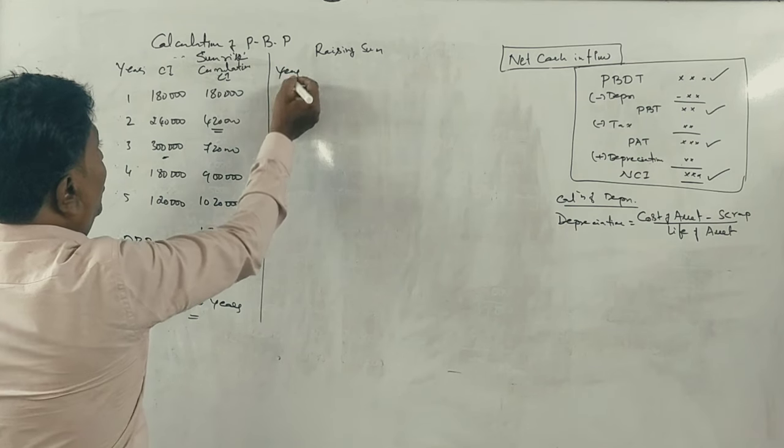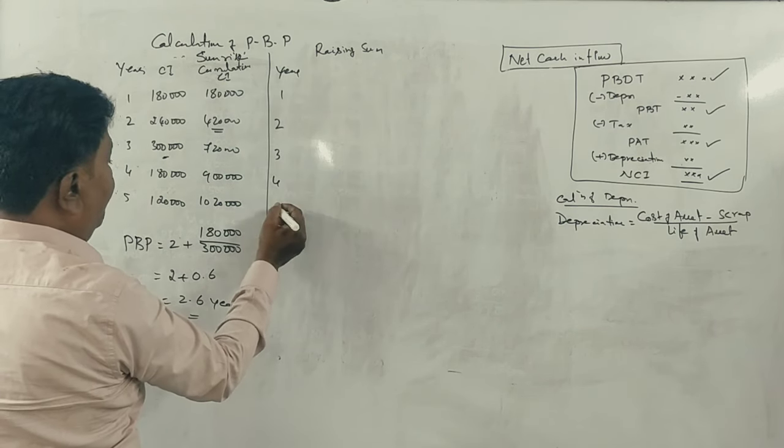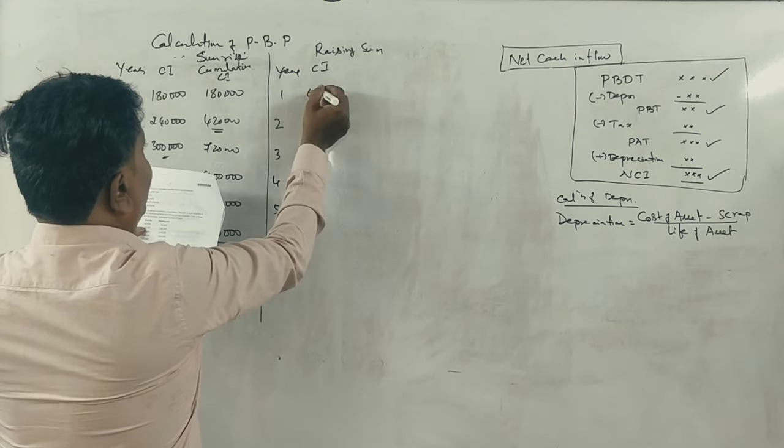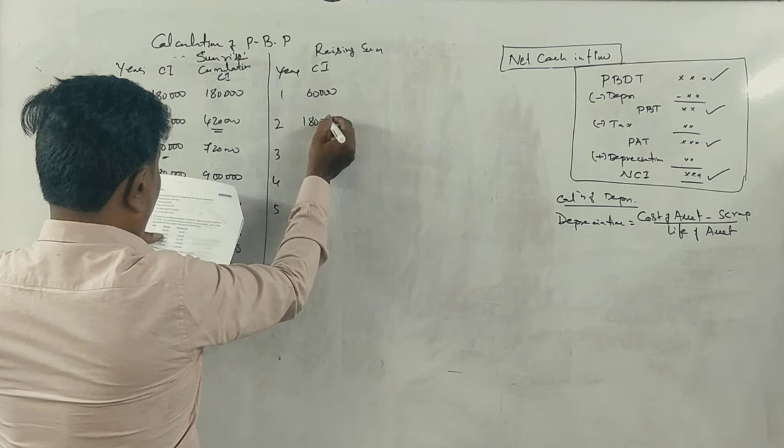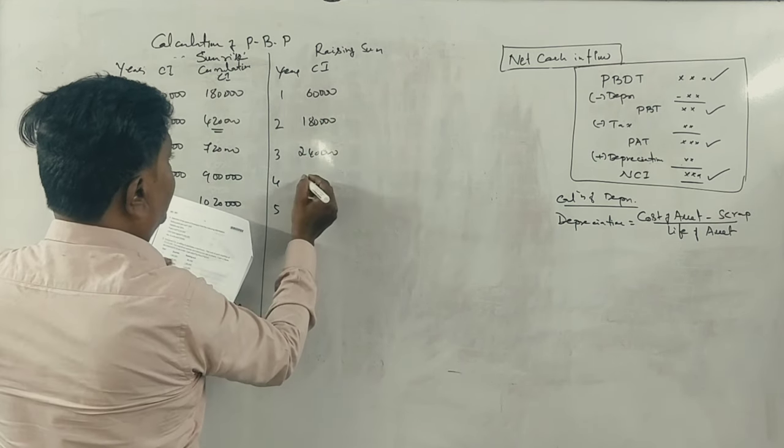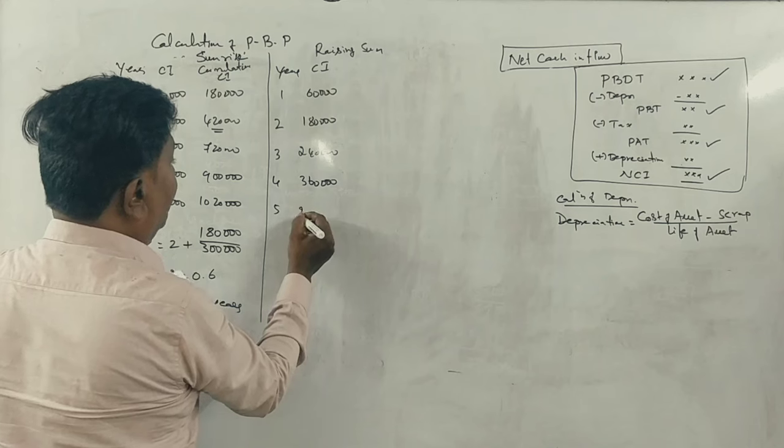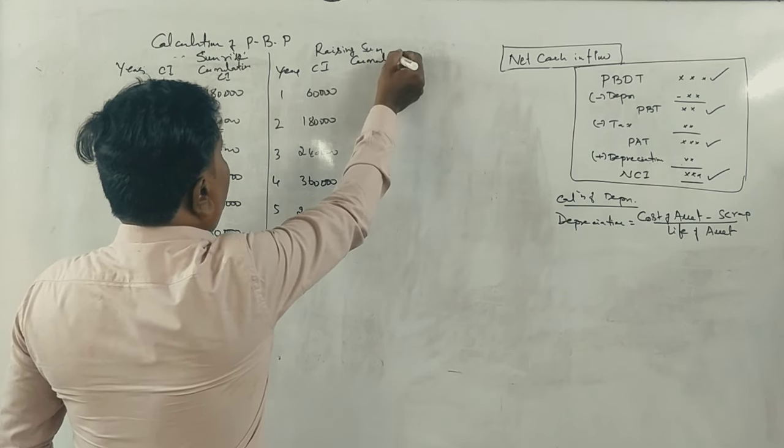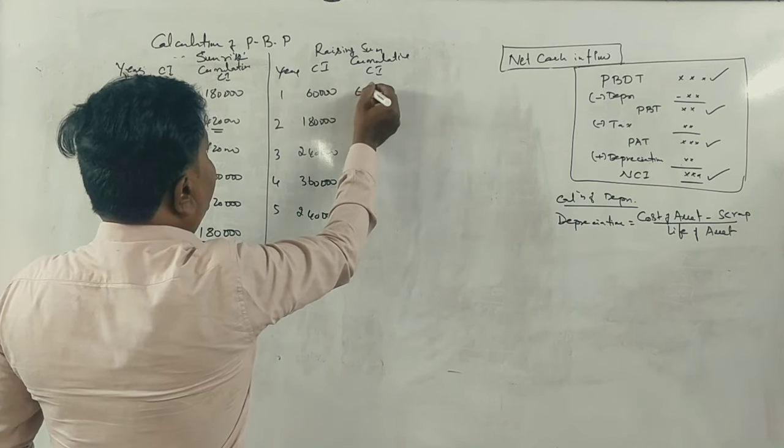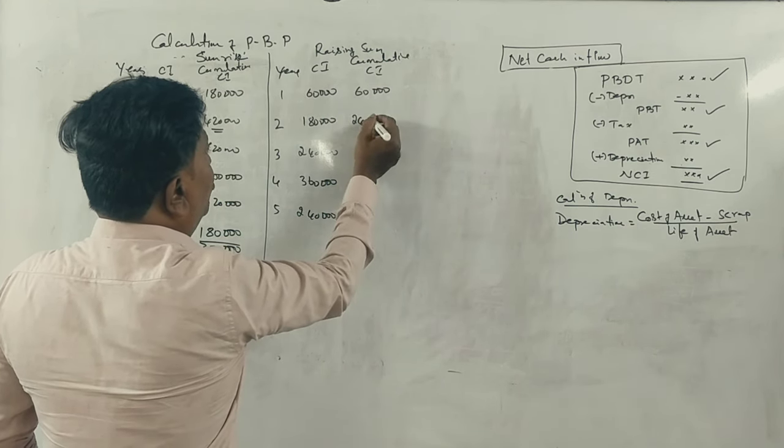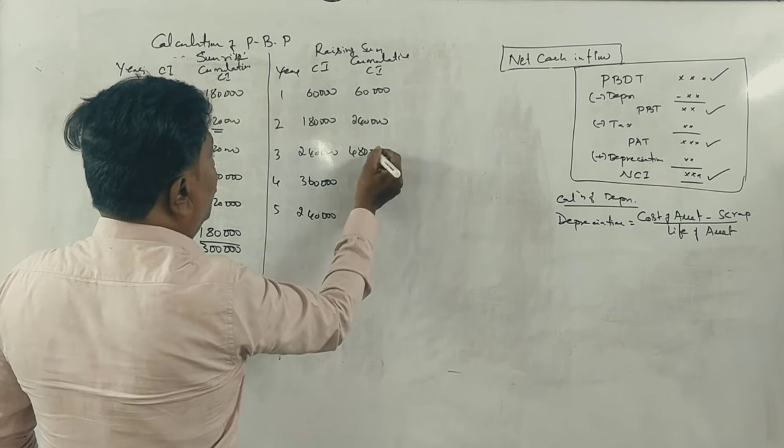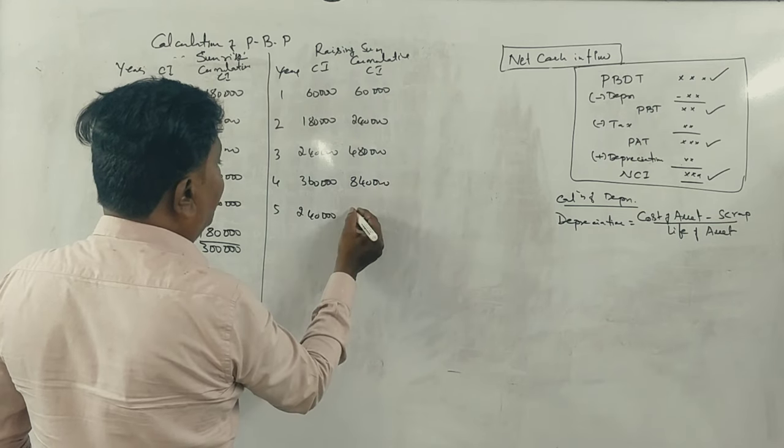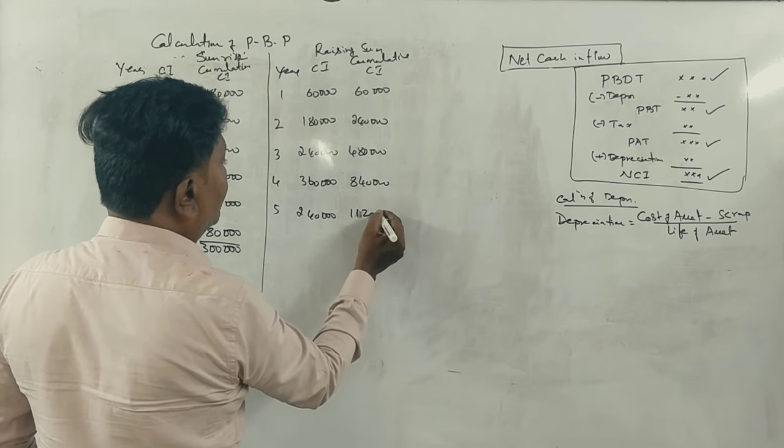Years 1, 2, 3, 4, 5. Cash inflows: 60,000, 1,80,000, 2,40,000, 3,60,000, 2,40,000. Cumulative cash inflow: 60, plus 180 equals 2,40, plus 2,40 equals 4,80, plus 3,60 equals 8,40, plus 2,40 equals 11,20. Correct.